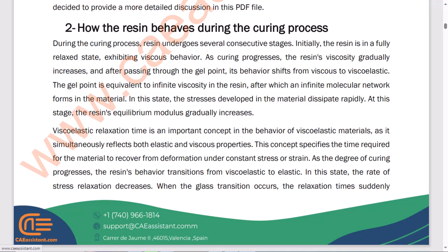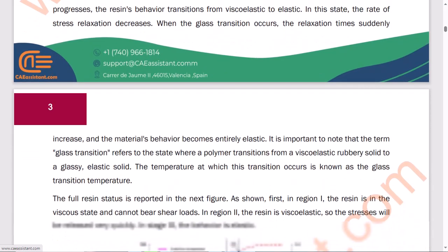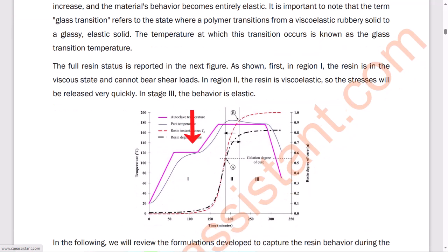In such cases, resin undergoes several consecutive stages. Initially, it is in a fully relaxed state, exhibiting viscous behavior. As curing progresses, the resin's viscosity gradually increases, and after passing through the gel point, its behavior shifts from viscous to viscoelastic. The gel point is equivalent to infinite viscosity in the resin, after which an infinite molecular network forms in the material. In this state, the stresses developed in the material dissipate rapidly. At this stage, the resin's equilibrium modulus gradually increases.